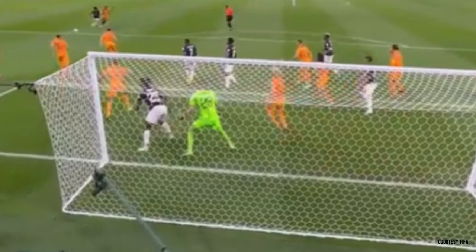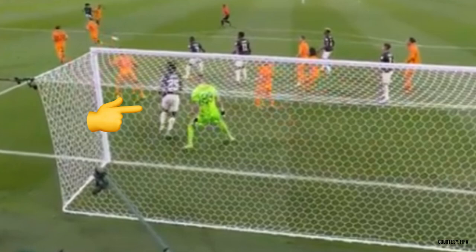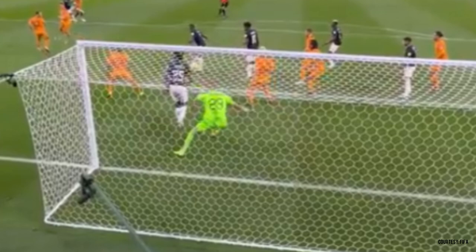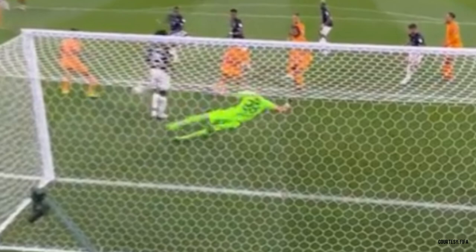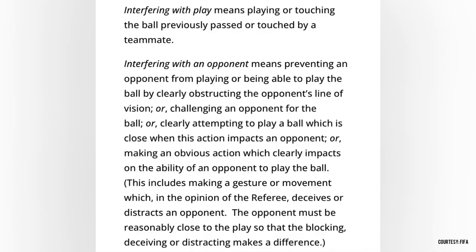We can probably analyze it best from this angle. As you can see, this Ecuadorian attacker is in an offside position, and although he didn't touch the ball, the referees felt that he was obstructing the goalkeeper's line of view. This is controversial because a lot of people feel that the goalkeeper can see just fine despite the attacker being where he is. However, the referee felt that he was blocking the goalkeeper's line of vision.